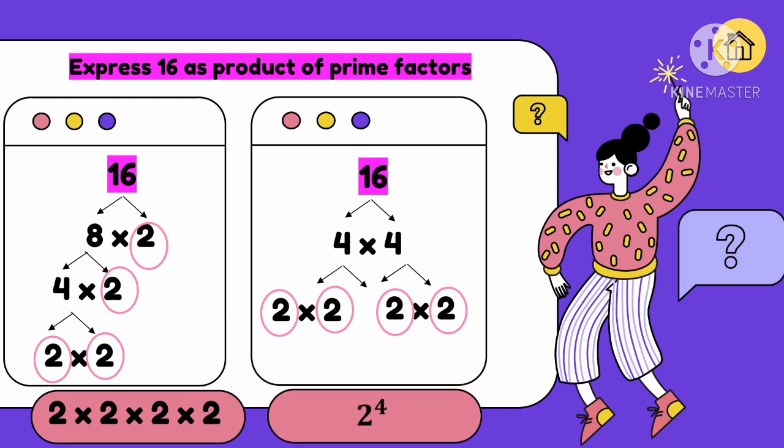We can also write product of prime factors using exponential form: 2 to the 4th. The base is 2, which we repeated four times. The exponent is the small number. Again, write 2 and then how many times it was repeated. Put the base 2, then the exponent on top showing how many times it was written.